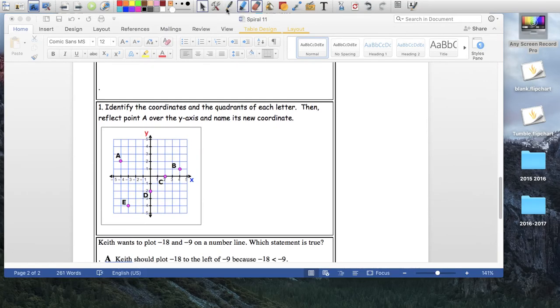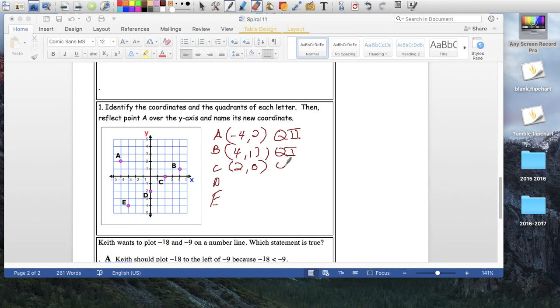Identify the coordinates and the quadrant for each letter. So here we got A, B, C, D, E. So A is 4 to the left, negative 4, how many up? 2 up, and it's in quadrant Q2. B is 4 to the right and 1 up, and that's in Q1. C is 2 to the right, and you don't go up, you don't go down, so it's 2 and 0, and that's on the x-axis, that's its location. It's not in any quadrant, it's on the axis. D is 0, you're not going left, you're not going right, and how many down? 2 down but negative, and it's on the y-axis. And finally E is 3 over, and 1, 2, 3 over, and how many down? 4 down, negative 4 down, and that's on Q3.